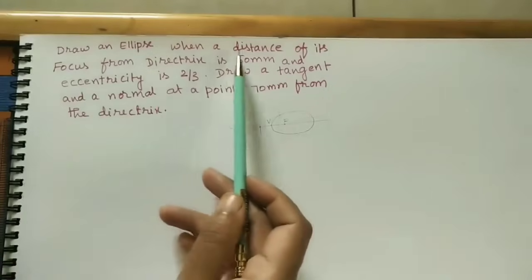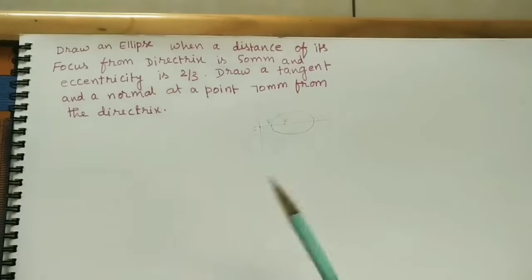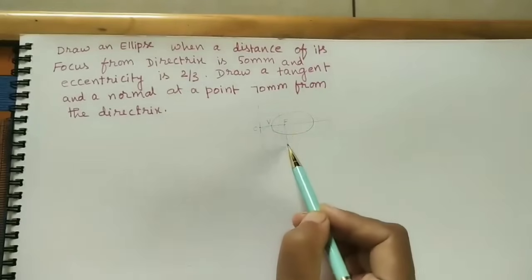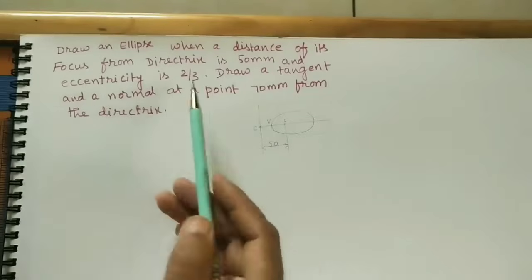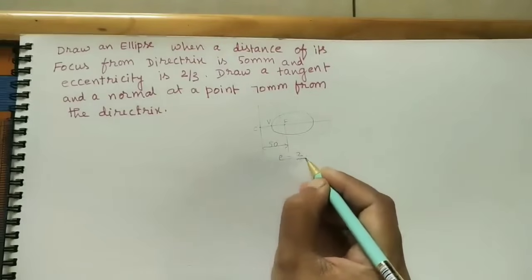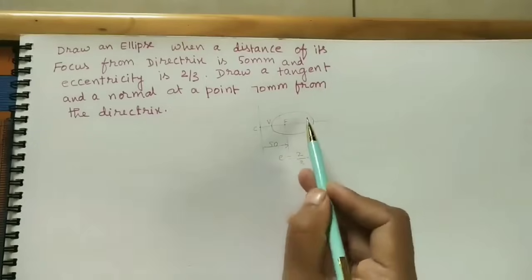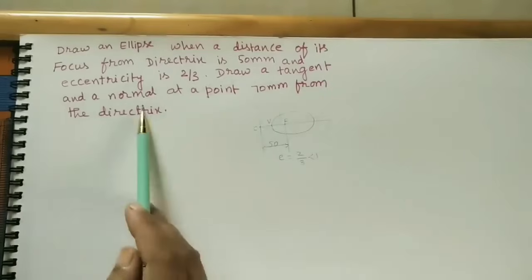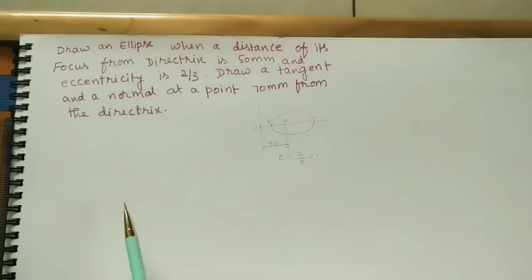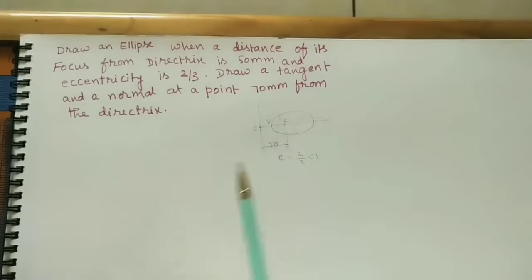Take the given data. Draw an ellipse when the distance of its focus F from the directrix is 50 mm. The eccentricity E is equal to 2/3. If eccentricity is less than 1, we get an ellipse. According to the given value, it is less than 1. Also, draw a tangent and normal at a point 70 mm from the directrix. So first we will construct the ellipse.